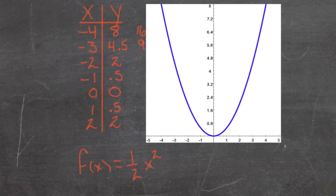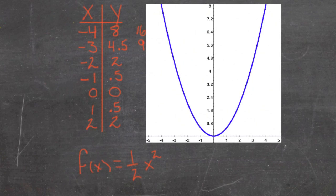So we take the x-number, we square it — which would make it a perfect square — but then we take half of that value and that becomes our output, f(x).